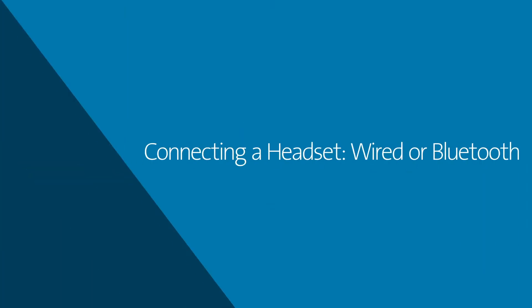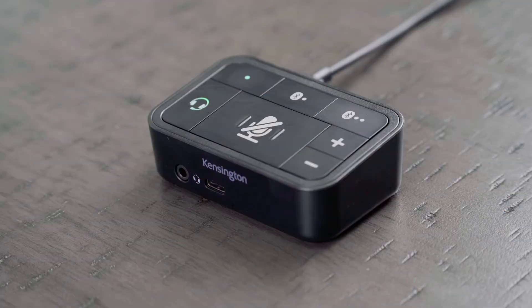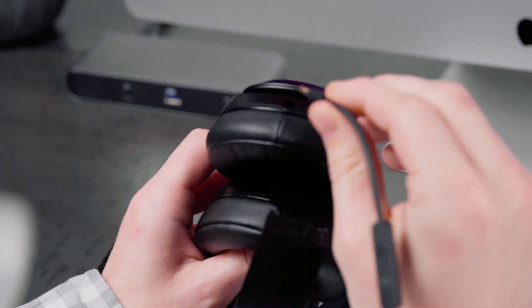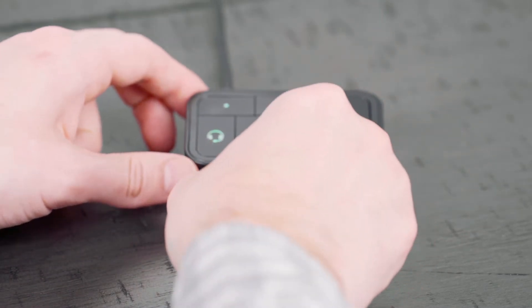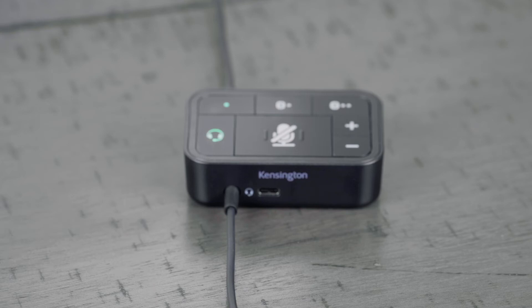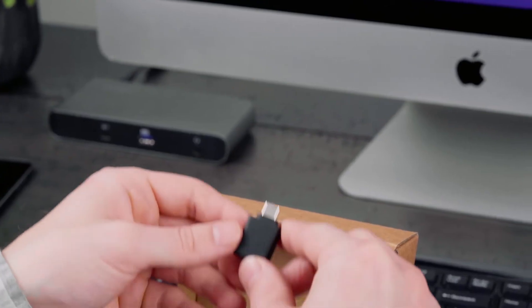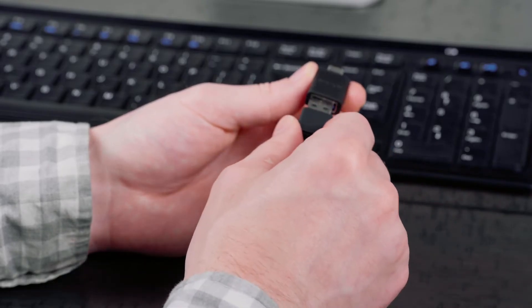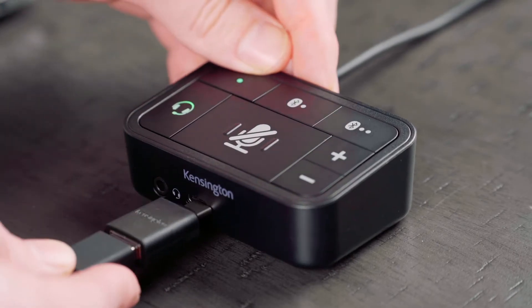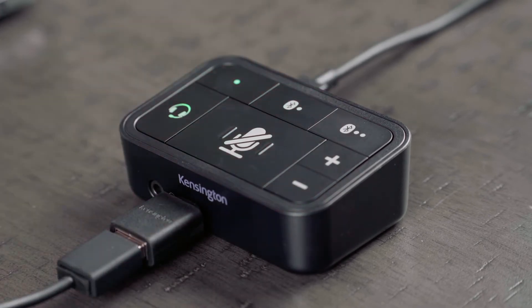Connecting a headset — wired or Bluetooth. Now we can connect a headset to the audio switch. By default, the audio switch is set to connect to a wired headset, indicated by the green LED light shown on the headset button. If connecting a wired headset, simply connect it to either the front 3.5mm audio jack or connect it to the USB-C port on the front of the audio switch. Please note that if you did not use the USB-A female to USB-C male adapter yet, that adapter can be used to connect a wired USB-A headset to the audio switch.